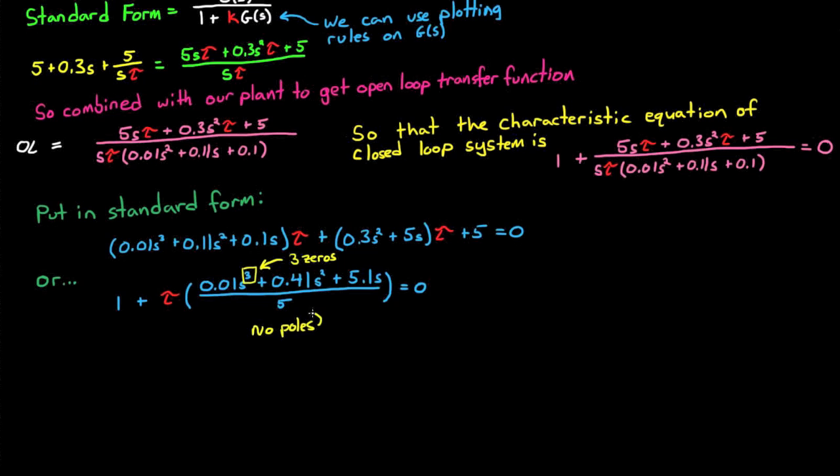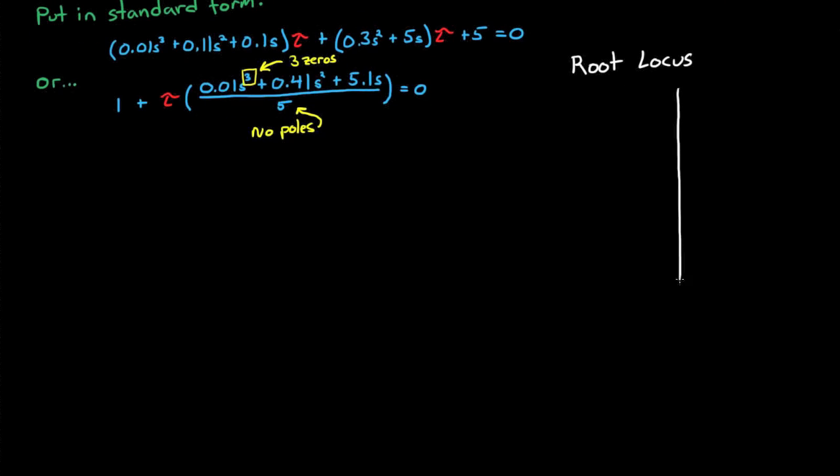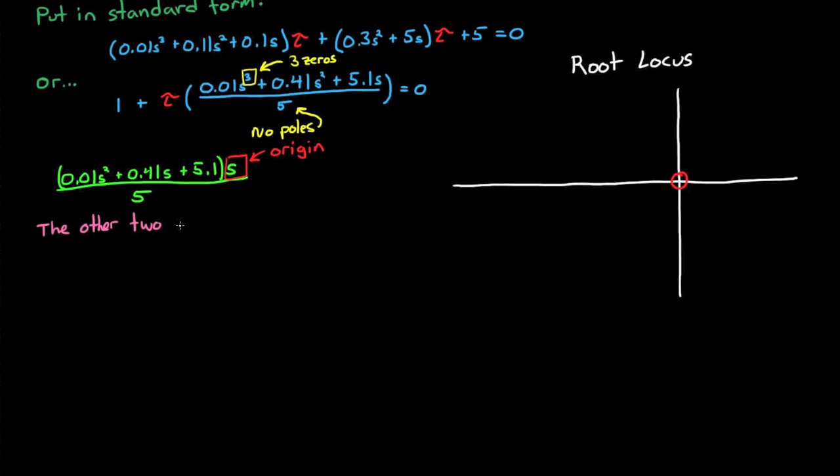Okay, this system has 3 zeros and no poles, so right off the bat we should realize that our plot will have 3 lines coming in from infinity, since there are more zeros than poles, and the loci start at the open loop poles and end at the open loop zeros. We can easily see that one of the zeros is at the origin, and the other two can be found using the quadratic equation. I found them to be around minus 20.5 plus or minus 9.5i. And I'll mark the zeros on my root locus plot, one at the origin, and the other two where I just found them.